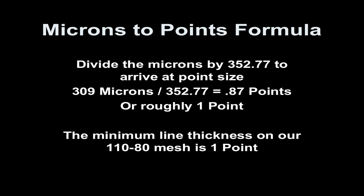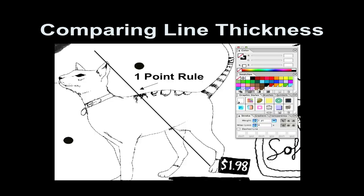This means that if you're creating an illustration that will be printed using a 110-80 mesh, you'll not want any of your lines to be less than one point in weight. But what do you do when a client brings in JPEG artwork in which the lines are less than one point in thickness? No problem, with a little bit of knowledge that I'm going to share with you. You can place the JPEG into your drawing program and then place a one point line next to the thin lines to compare the line weight. If the lines in your JPEG artwork are too thin, you're going to have to increase the weight.